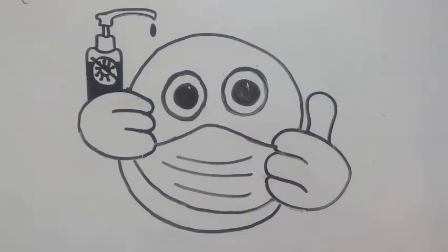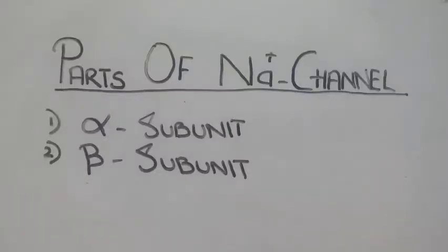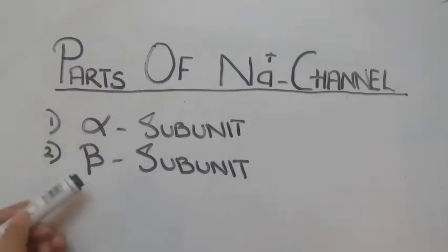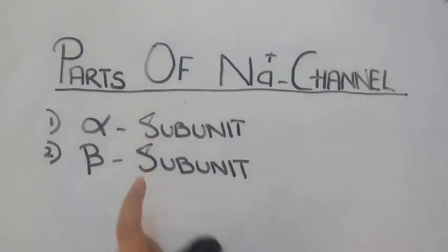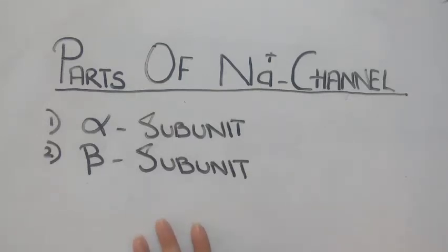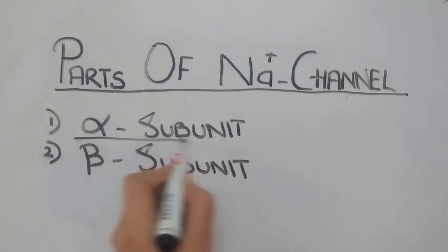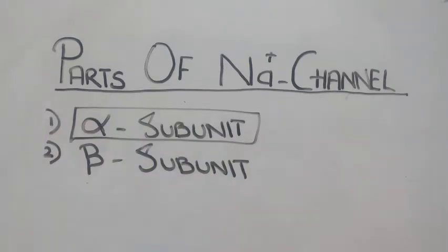Assalamu alaikum everyone, this is Dr. Mahanoor Bangesh. Welcome to my YouTube channel. Hope you guys are doing well. This video is about the structure of voltage-gated sodium channels. The sodium channel consists of two parts: one alpha subunit and two or three beta subunits. The alpha subunit is the main functional unit, responsible for all the functions of the sodium channel, so in this video we will be discussing the alpha subunit.